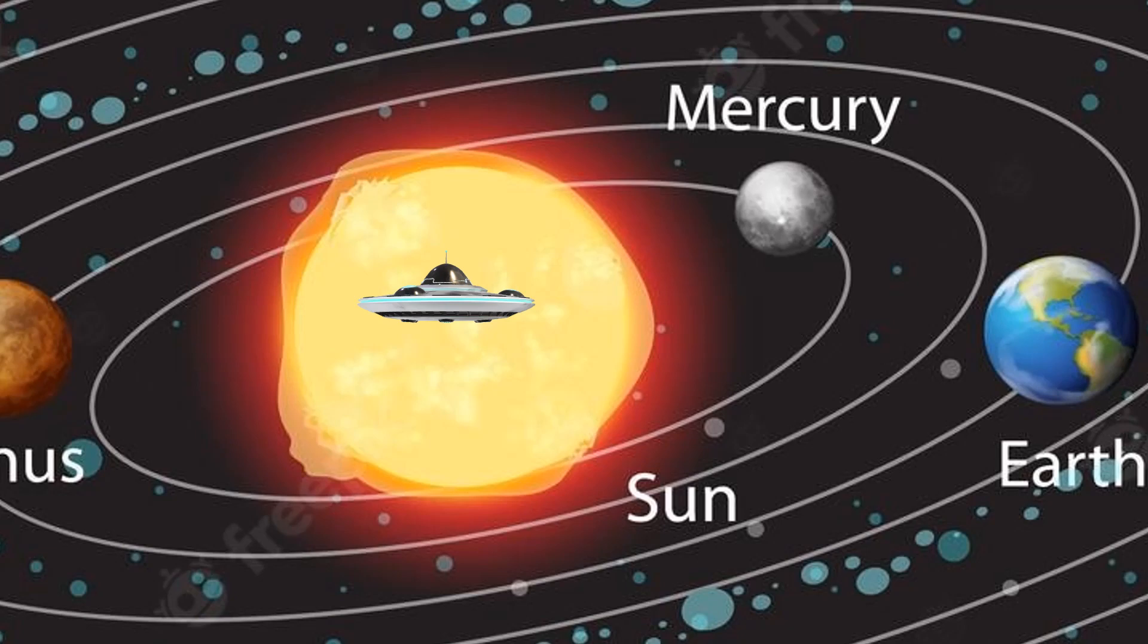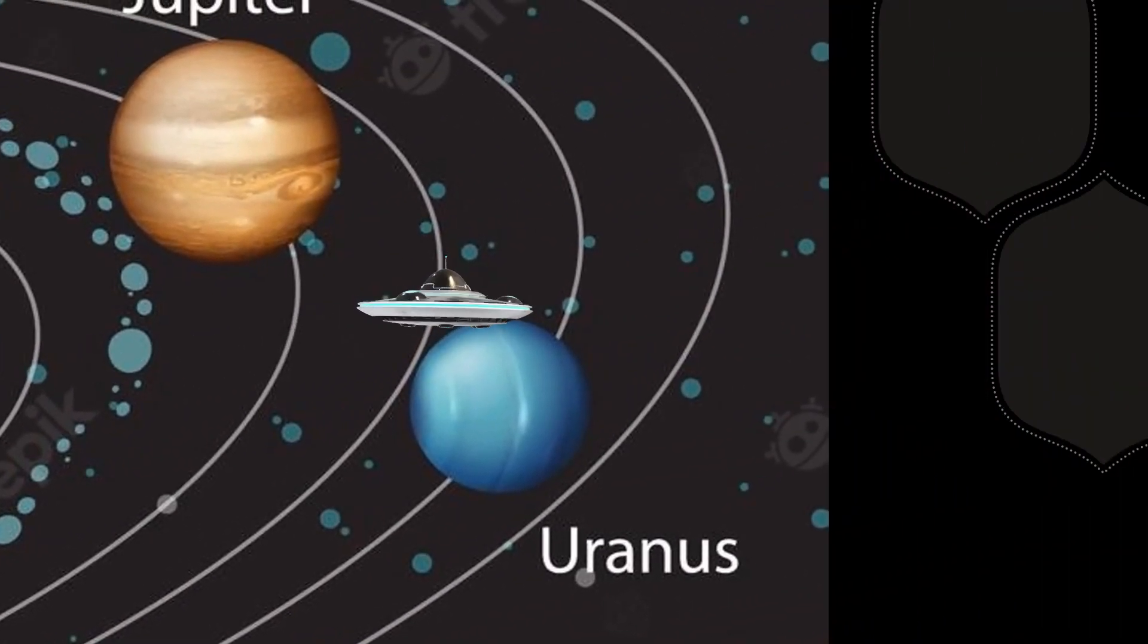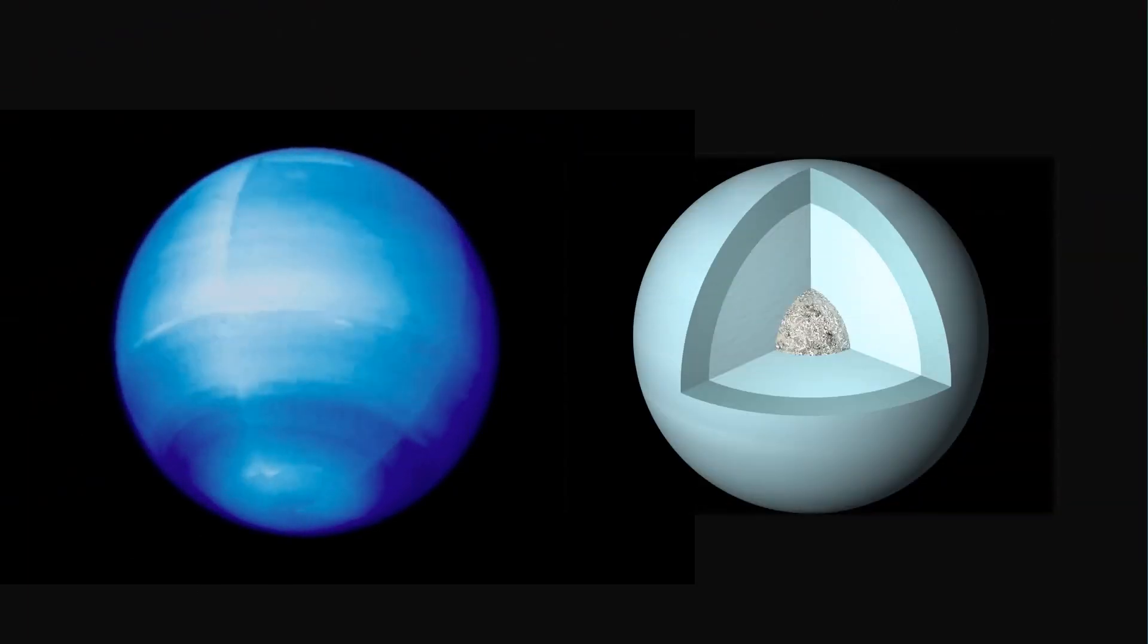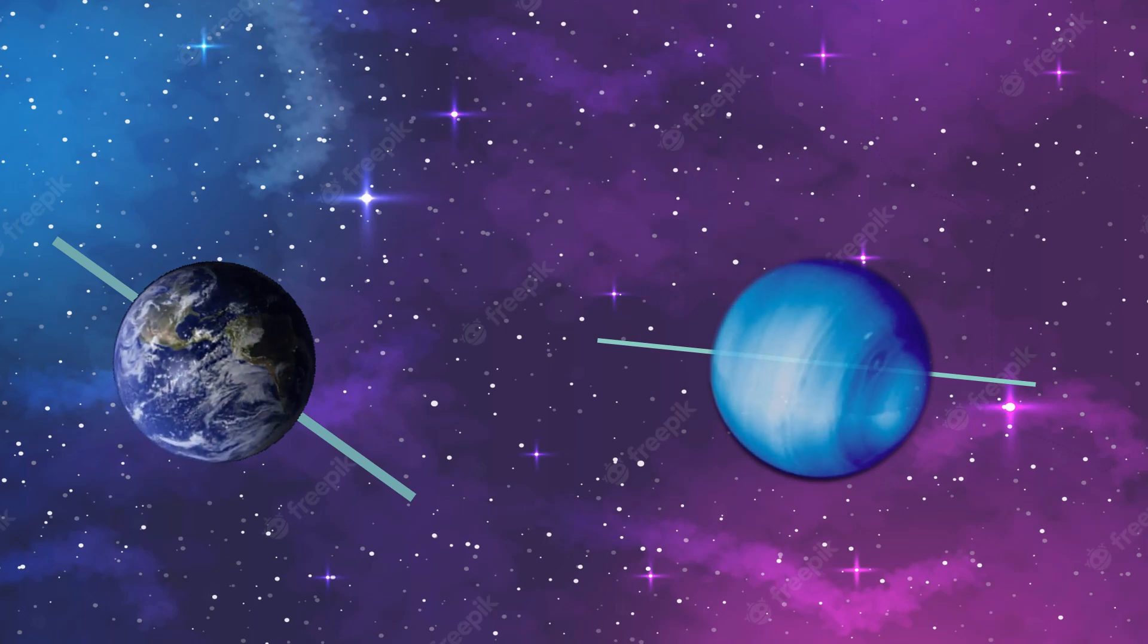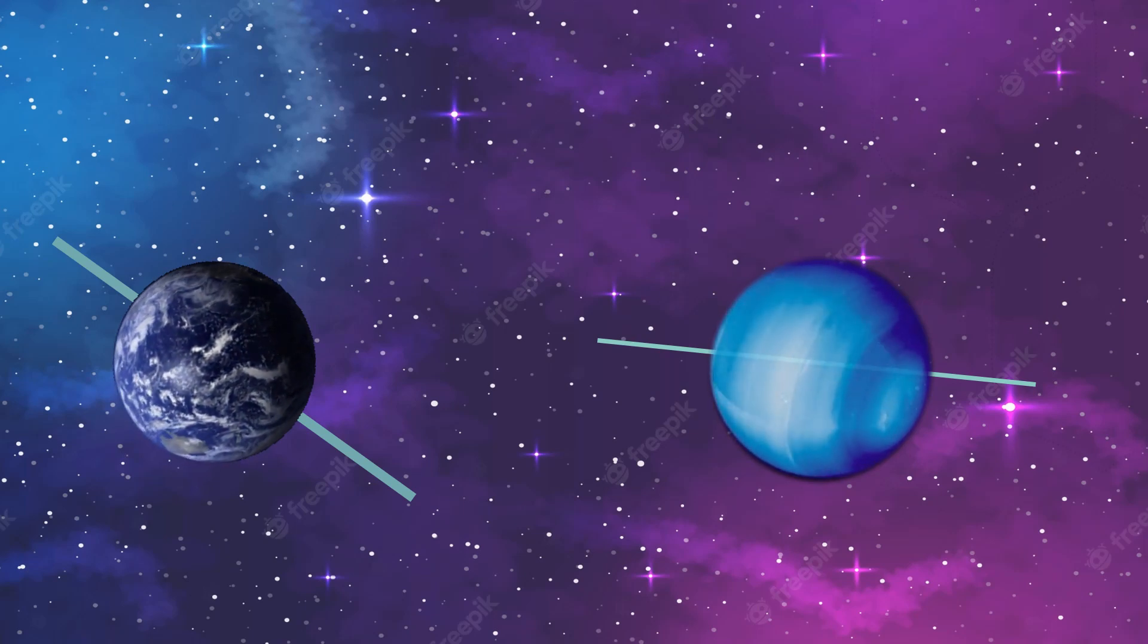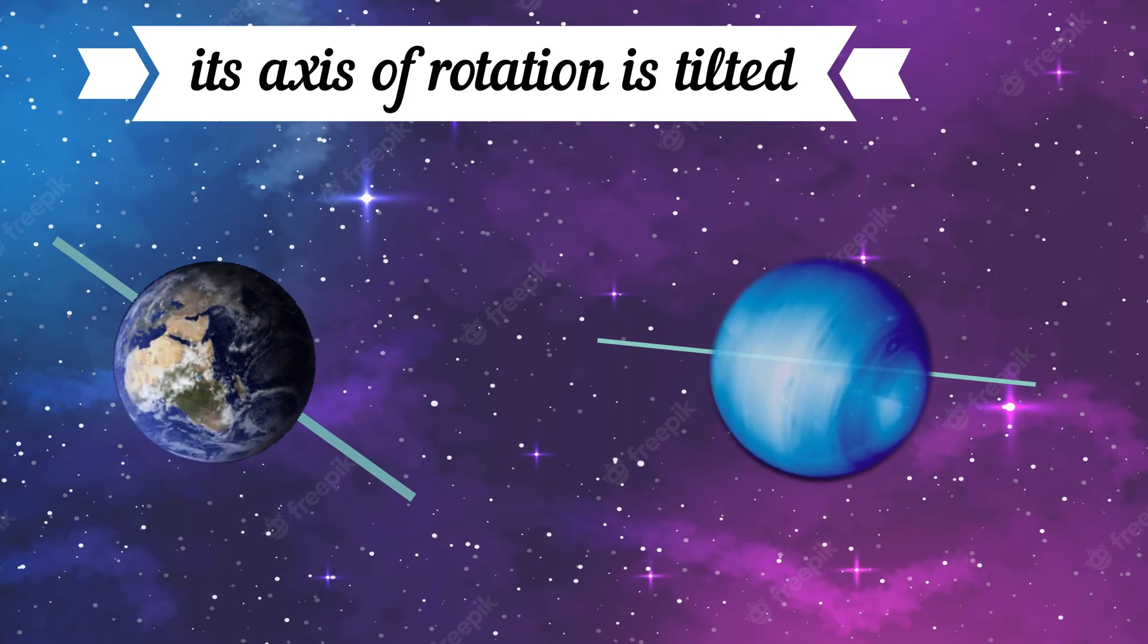It's time to go to the seventh planet from the Sun, Uranus. The elements in the interior of Uranus are ice and rock. Uranus is a special planet because its axis of rotation is tilted.